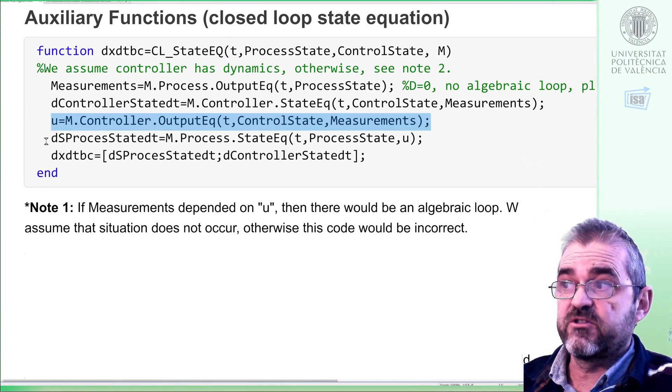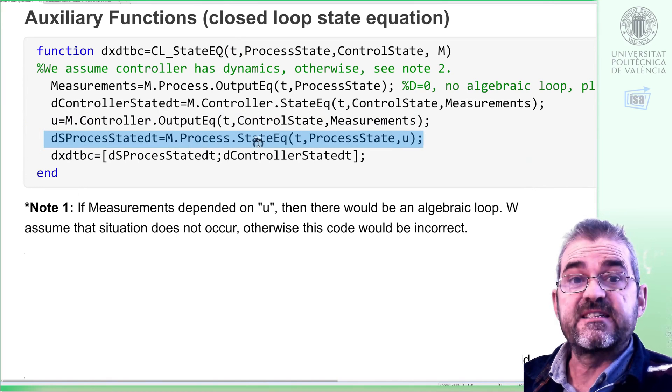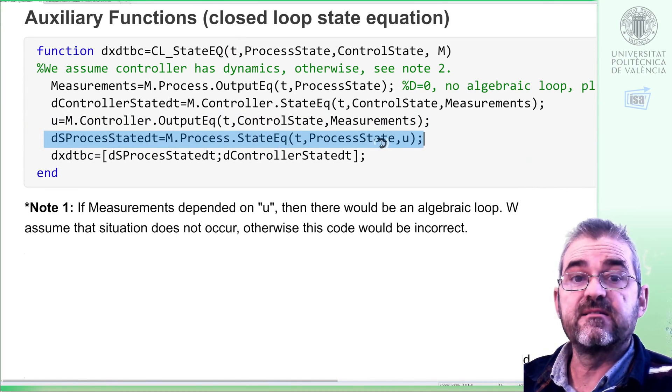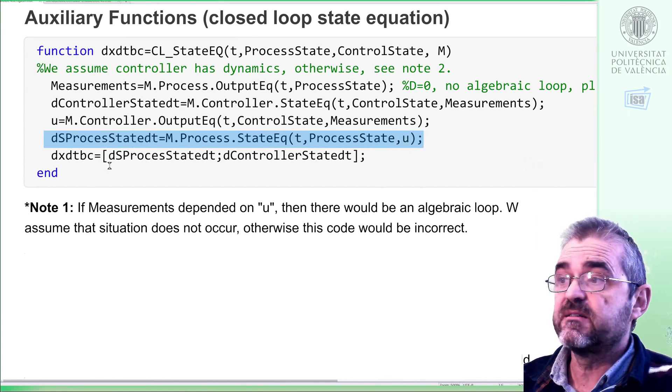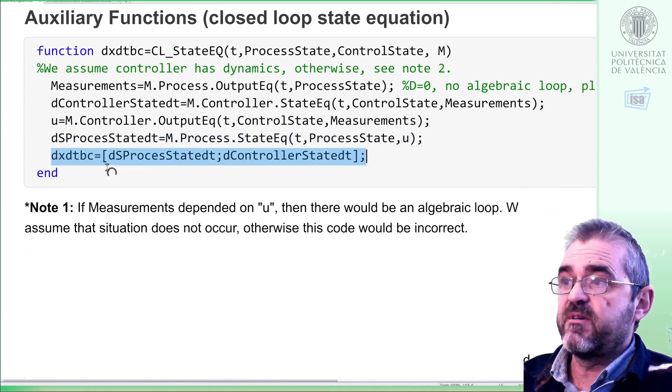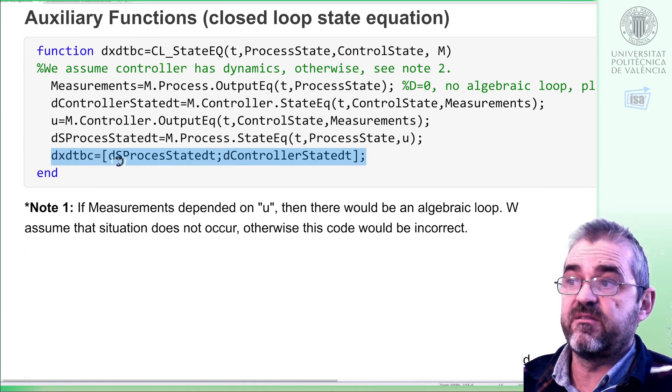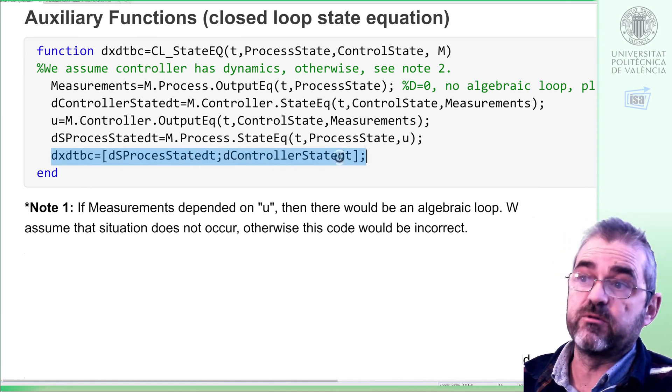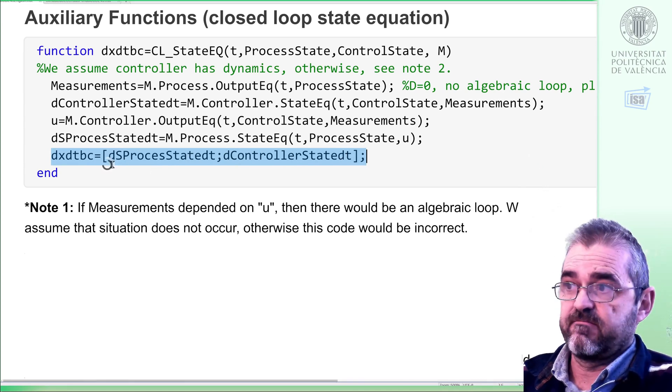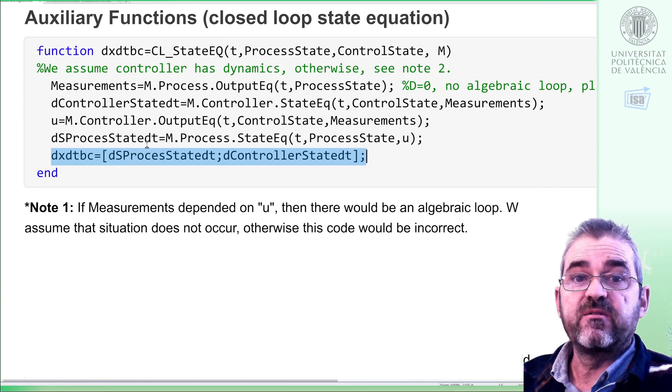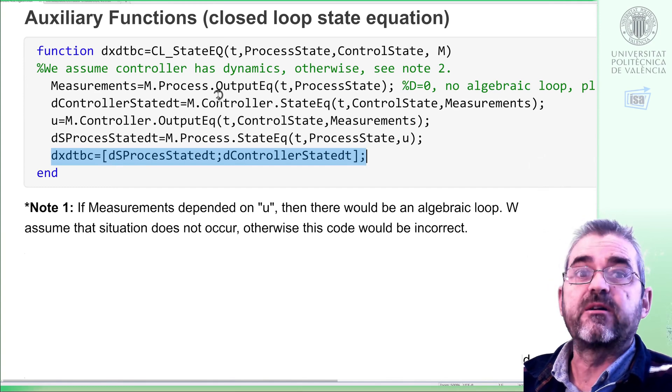Assuming no algebraic loop, this line computes the correct control action, and once I have the control action, which is the input to my process, then evaluating the process state equation with the process state at time t and the input u, then I get the derivative of the process state. So the derivative of everything together is just stacking in a longer column the derivative of the process state and the derivative of the controller state. This is the core of this video: how to close loops instead of with boxes and arrows and mouses in Simulink, with MATLAB code.